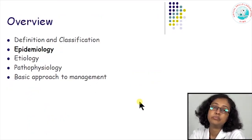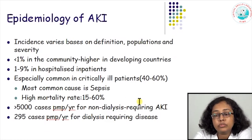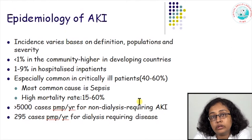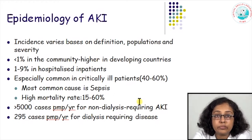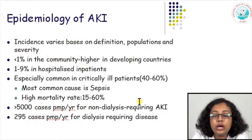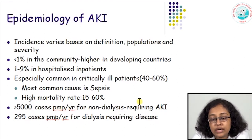Having looked at the classification, let us look at the epidemiology of acute renal failure. The incidence of acute kidney injury varies based on the definition, the population, and the severity considered. Broadly, it is classified as community-acquired or hospital-acquired. Community-acquired AKI patients are those admitted to the hospital with an already-developed renal insult. This is uncommon in developed countries — probably due to better infection control — and more common in developing countries like India. Hospitalized patients often develop AKI because of a variety of causes; the incidence ranges from 1 to 9 percent and is higher in developed countries.